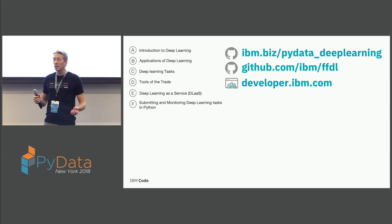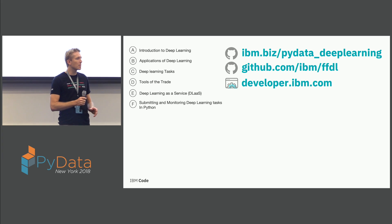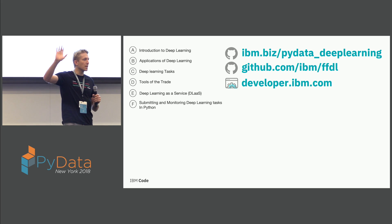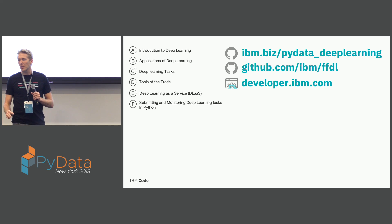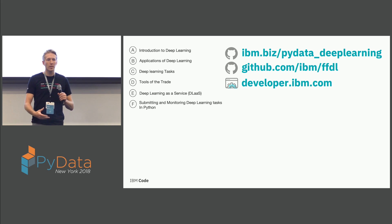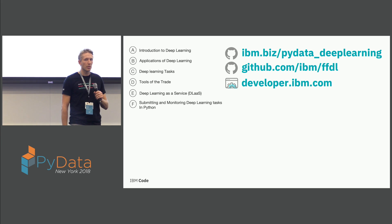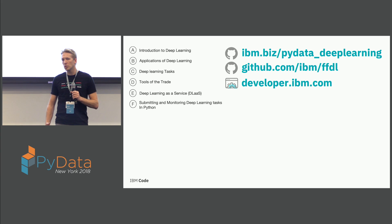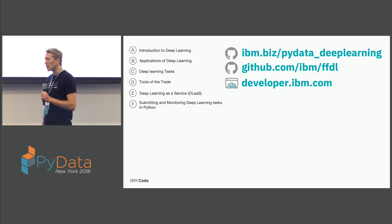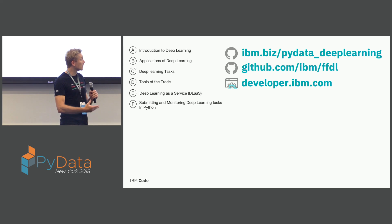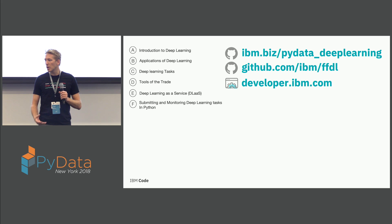Today we're going to level set. I want to talk about some of the applications of deep learning, some deep learning tasks — what you have to perform in order to train and evaluate a deep learning model — the tools you use for training, evaluating, and deploying, DLAS which is our cloud-based deep learning as a service platform built on Fiddle, and then walk through code to submit and monitor deep learning tasks using Python.